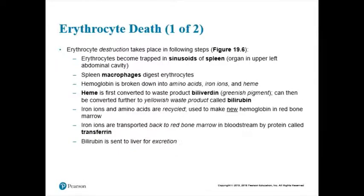The heme gets turned into another pigment called biliverdin — a greenish pigment — and then converted again into bilirubin. Your body just excretes the bilirubin: it gets sent to the liver to help make bile, which enters your intestines and you poop it out. So you basically poop out part of your blood — the heme — after it's been converted into bilirubin.